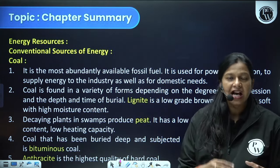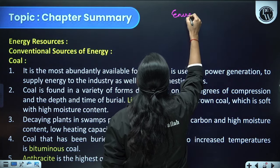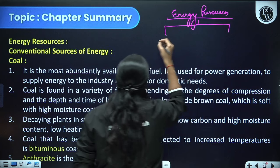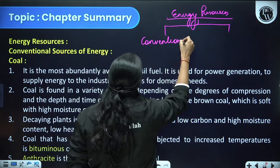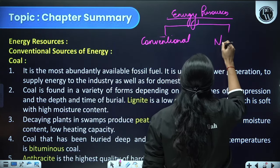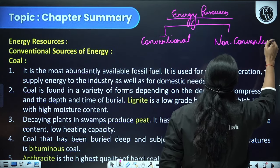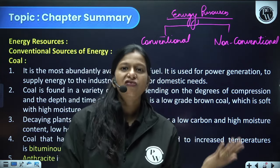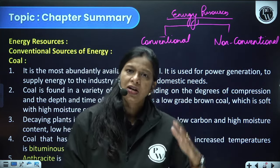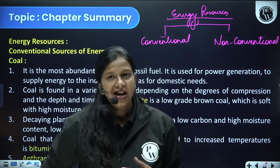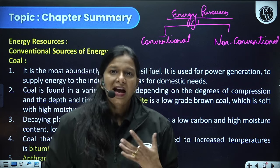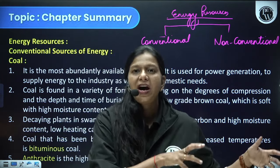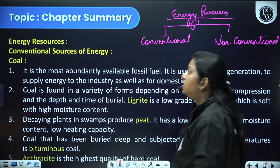Moving on to energy resources. Energy resources can be subdivided into two categories: conventional sources of energy and non-conventional sources of energy. Conventional sources are traditional sources that have been in use for a very long time. Non-conventional sources have been identified later, are still developing, and we are finding better ways to use them. Conventional sources are more actual resources; non-conventional are more potential resources. The most important conventional resource is coal.